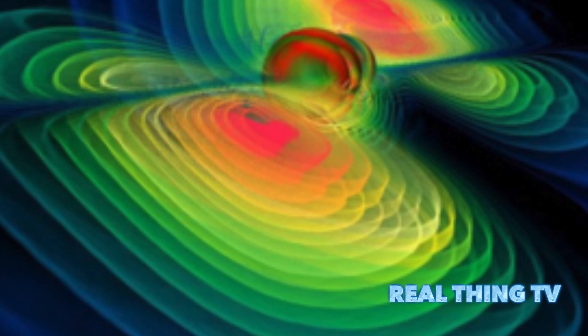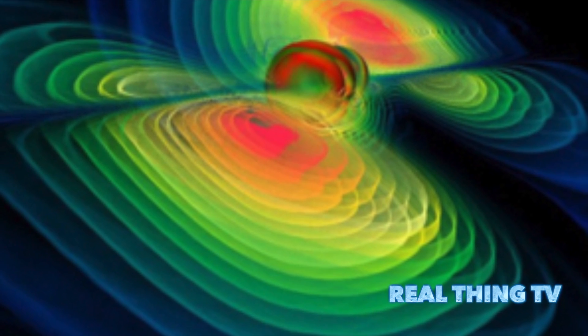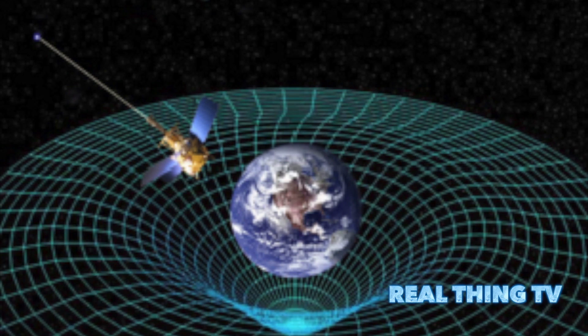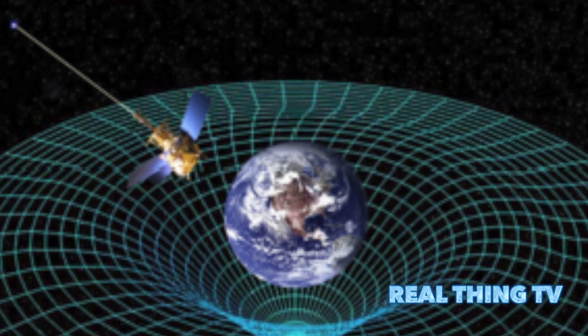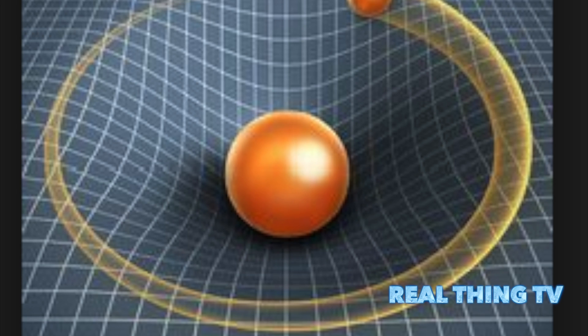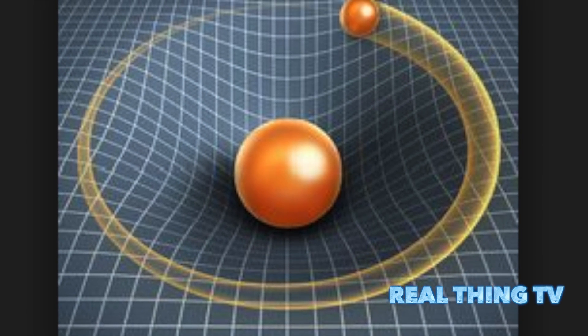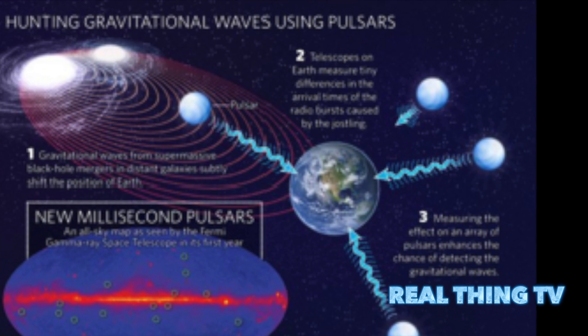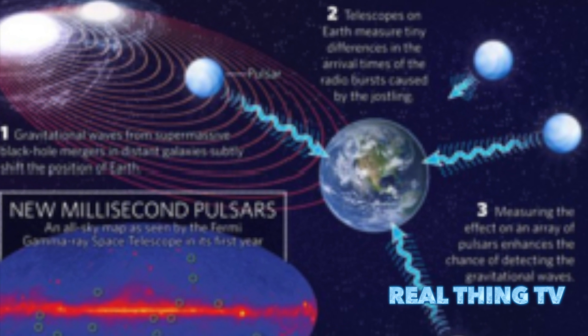Now LIGO experts have studied ripples from a black hole merger billions of years ago. Ritz added that it is exactly what Albert Einstein had theorized. Gravitational waves come about as a result of explosions or violent events in the universe.